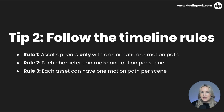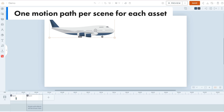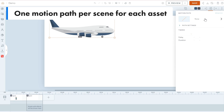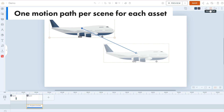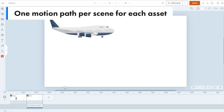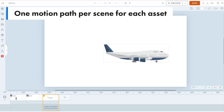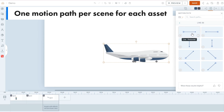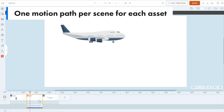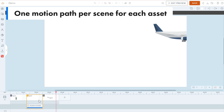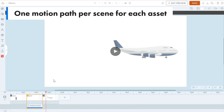Rule number three is that each asset can only have one motion path per scene. You can't have it move two different places in one scene. To demonstrate with the airplane: we add a motion path to have it fly somewhere, but we can't add a second one directly. The workaround, similar to the last rule, is to right-click and choose Continue Scene, then add a new motion path. Now you can play both scenes to see the airplane has two different motion paths.